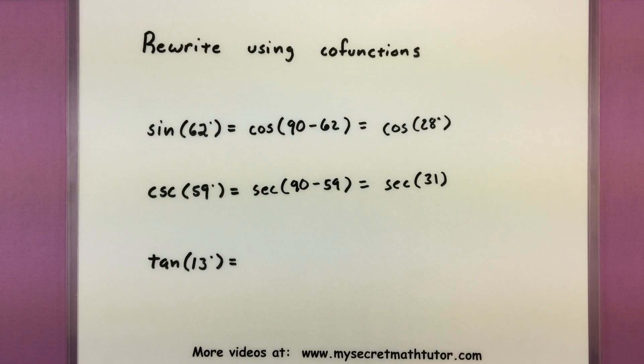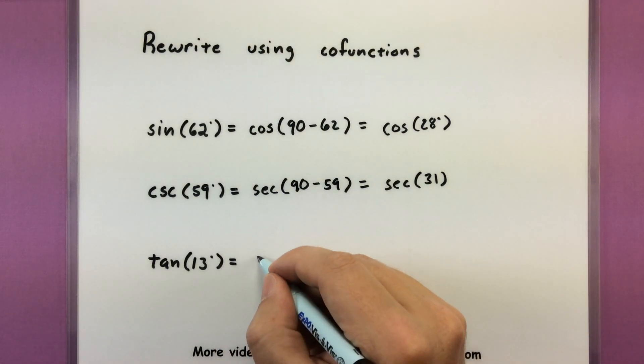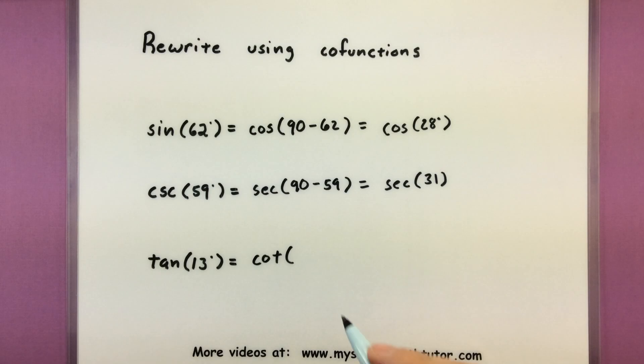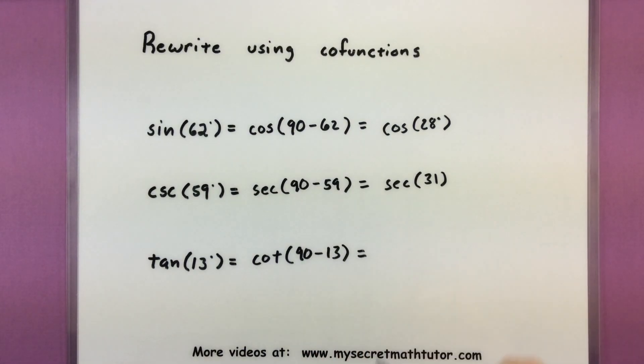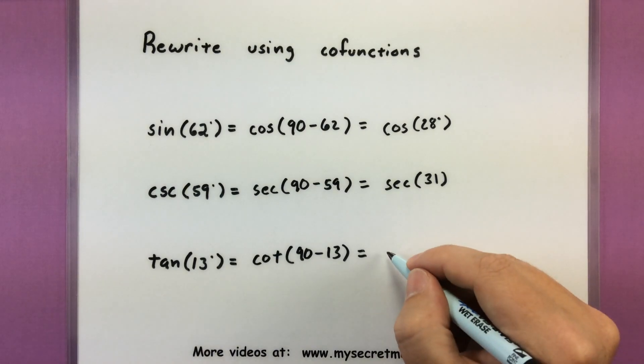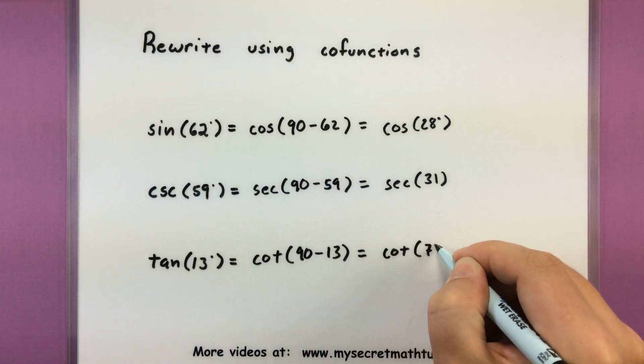Alright, one more to go. Tangent's cofunction is cotangent. Complementary, 90 minus 13. So 90 minus 13 is 77. Cotangent of 77.